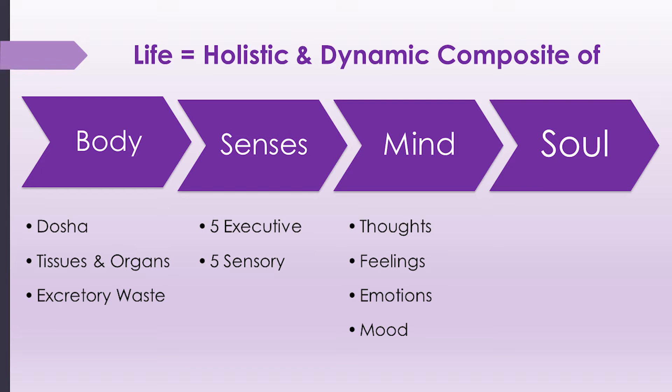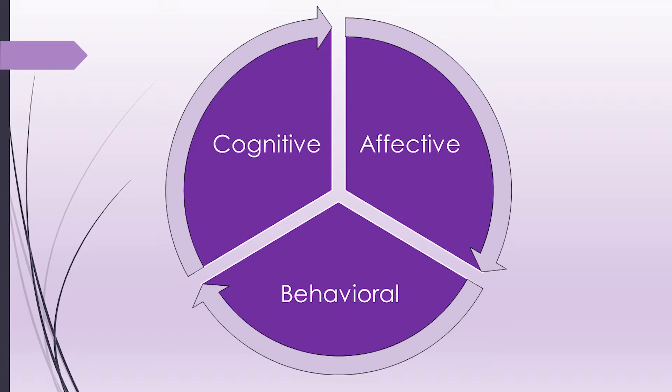The third aspect of the holistic nature of life is the mind — our mental and emotional well-being. We have thoughts, feelings, emotions, and moods. The mind has three types of activities: the first is cognitive, relating to thinking, rationalization, analysis, memory, and focus; the second is affective, dealing with feelings and emotions; and the third is behavioral, governing our activities, habits, drives, inclinations, and tendencies. Together, these three make up our mental and emotional aspect.